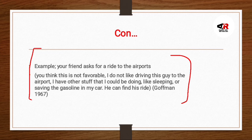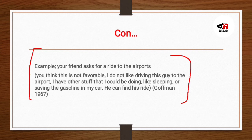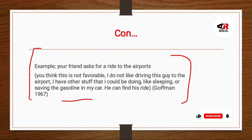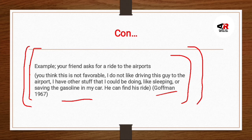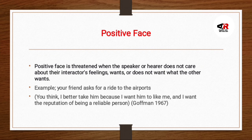Negative face ka example: your friend asks for a ride to the airport. You think this is not favorable — 'I don't like driving this guy to the airport. I have other stuff I could be doing, like sleeping, or I should save gasoline in my car. He can find his own ride.' Yeh Goffman ne 1967 mein explain ki thi. Is example mein sirf negativity hai — koi help nahi — that's why it's called negative face. Even though he has a car, he wants to be independent and not be imposed upon by others.